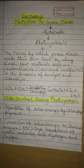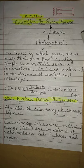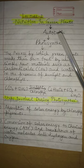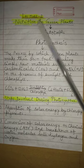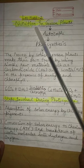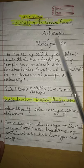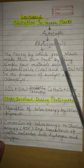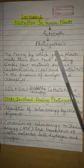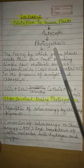Hello students. In the last video we had discussed the first topic of life processes named nutrition. In that section we had discussed about modes of nutrition. Now in this section we will be discussing about nutrition in green plants. Green plants — we know that green plants are autotrophs. Green plants perform the process of photosynthesis.